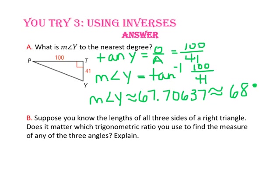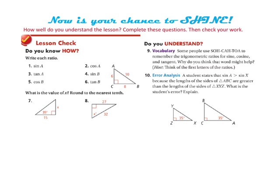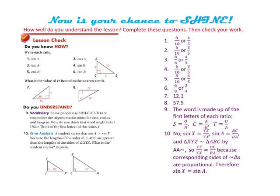For part B, suppose you know the lengths of all three sides of a right triangle. Does it matter which trigonometric ratio you use to find the measure of any of the angles? No, it doesn't matter at all. As long as you identify the appropriate leg that is either opposite or adjacent to the angle measure you're looking for, you can use whichever ratio you want. Now pause the video and do the lesson check. Don't forget to check your answers on the next slide. If you have any questions, be sure to ask me in class.